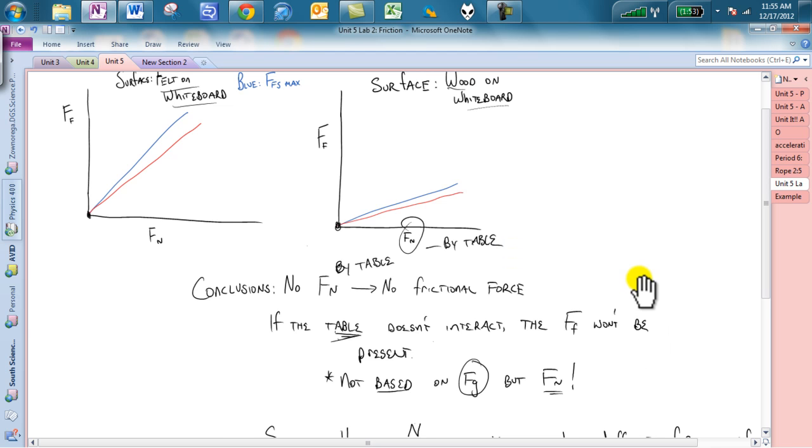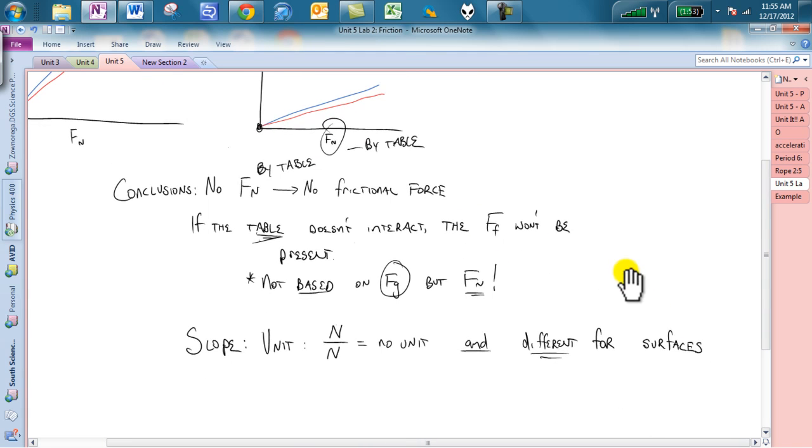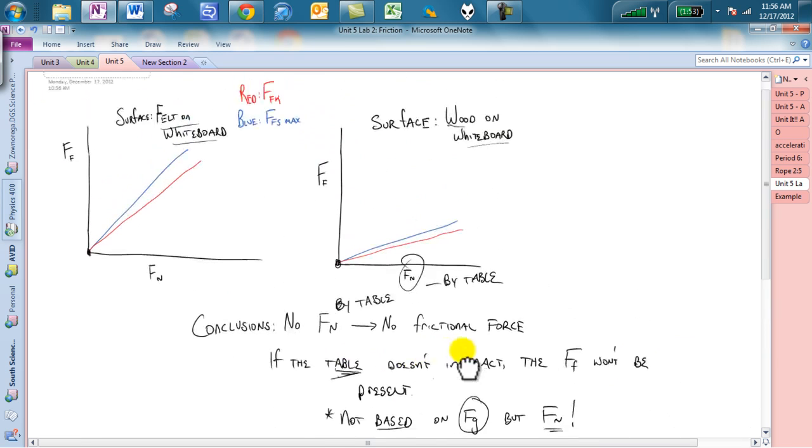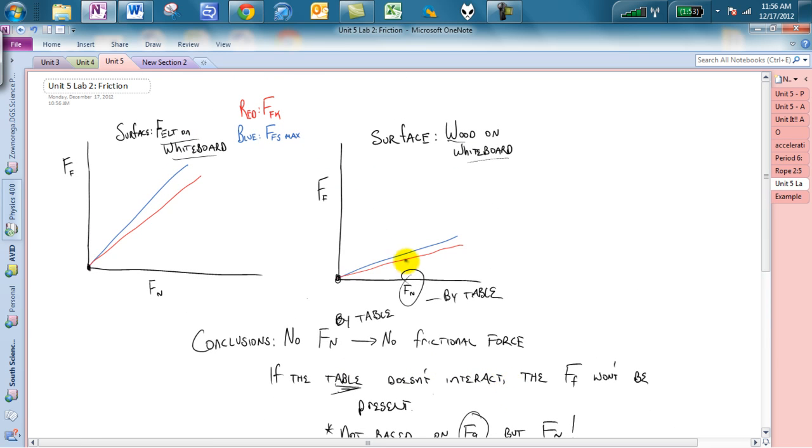The second one is, I want us to take a look at the slope, and you will notice that the slope is a newton per newton, which is actually a value that does not have a unit. And you will notice, as I mentioned before, for different surfaces, we will have different slopes. So, Ffk, change slope, or an Ffs max, change slope when we change surfaces.